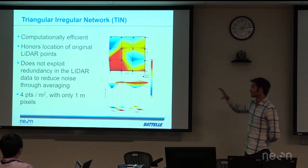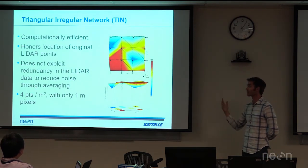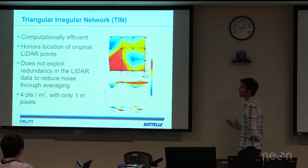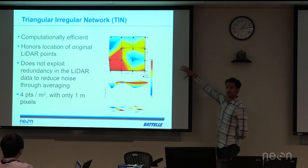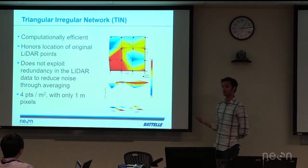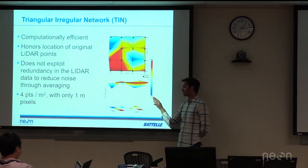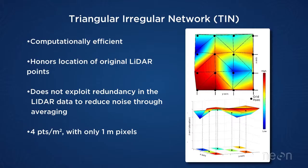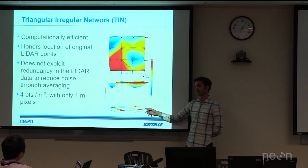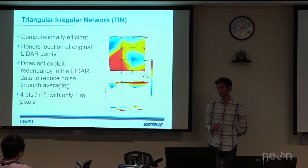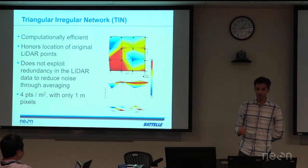One advantage of this approach is that it honors the location of the true data point — you're never filtering a lot of observations or creating a new elevation from what you observed. It's also computationally efficient, which is the main reason we use it when producing a lot of data in an automated fashion. The main downfall of the triangular irregular network is that it doesn't exploit redundancy in the LiDAR data to improve accuracy, so multiple points within a single grid cell aren't averaged to reduce error.